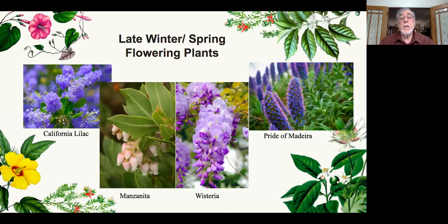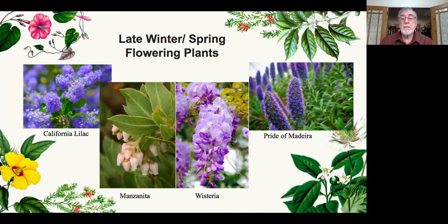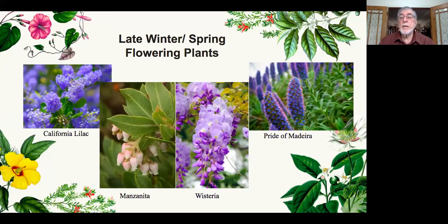We are bee-centric — we go with what the bees tell us that they like. We're not hung up on native plants only; we know bees like native plants, but we also know they like non-native plants. California lilac on the left is the Ceanothus. Manzanitas are very interesting — people don't realize how early these plants flower; they'll flower in the middle of December, and bumblebees in particular will be there to pollinate them. Wisteria is an exotic but the large carpenter bees love it. Pride of Madeira on the right is loaded with different kinds of bees — it comes from another part of the world, but we plant it because bees like it.